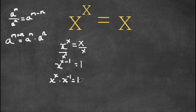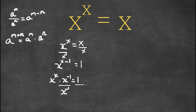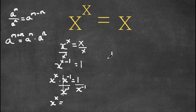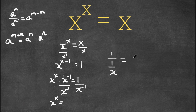So now, if I divide both sides by x to the power of negative 1, those two cancel out. I get x to the power of x is equal to 1 over x to the power of negative 1. Now 1 over x to the power of negative 1 is the same as x, so we get x to the power of x is equal to x.